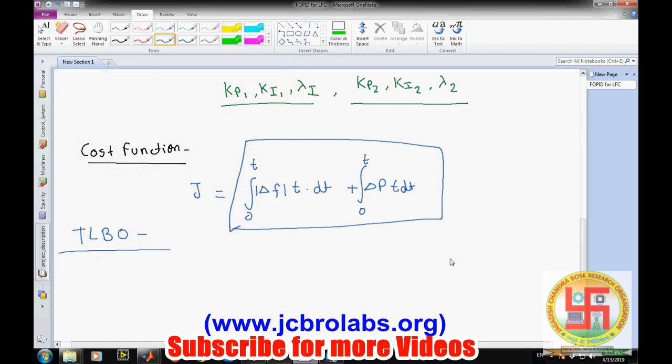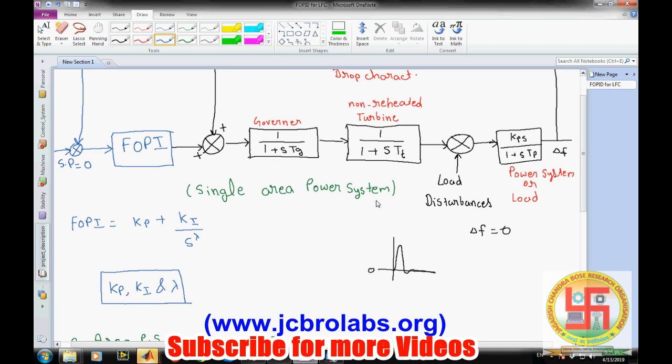First let's have a look on the Simulink model. Here it is: two area non-reheated. We forgot to mention the parameters of these values. We have taken the standard parameters that many people have used in their papers. The KP value is 120, TP value is 20, TT value is 0.3, TG value is 0.08, and R value for drop characteristics is 2.4. These parameters have been considered after going through several research papers.